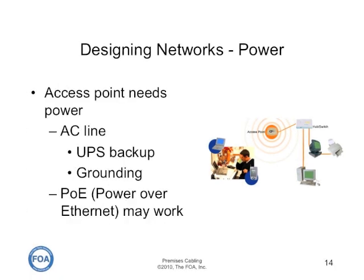Access points also require power. If it's AC powered, it will need an uninterruptible power backup and data quality grounding. If it's using power over ethernet, the access point must be within the limits of the power able to be delivered over the unshielded twisted pair cabling using power over ethernet.